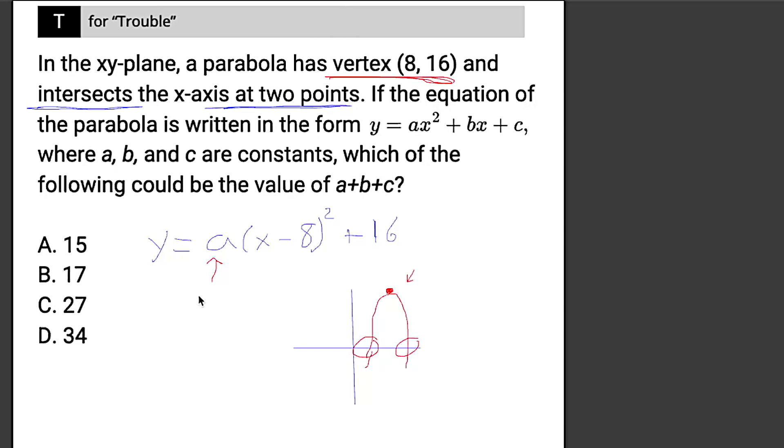All right, now back to the problem at hand. It is asking us about A plus B plus C, which unfortunately is in the wrong form because this is standard form, but we're in vertex form. So what the heck are we supposed to do? Well, let's actually just convert this to standard form. And the way we do that is simply by foiling out. An easy way to think about this is we're going to want to do our exponents first, if you think about PEMDAS.